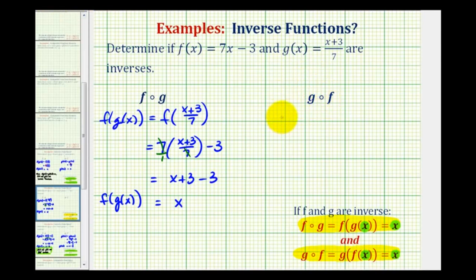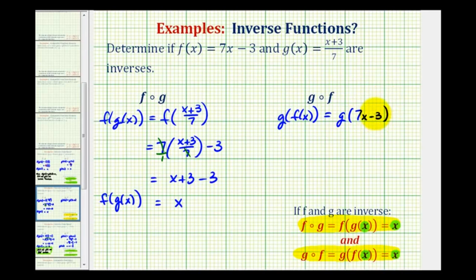This is good news, but we also have to show that g of f of x is equal to x. So we'll write this as g of f of x. Now the inner function is f of x, which is equal to seven x minus three, so this is equal to g of seven x minus three. This becomes the input into function g, so we'll substitute seven x minus three for x, giving us seven x minus three plus three, all divided by seven.